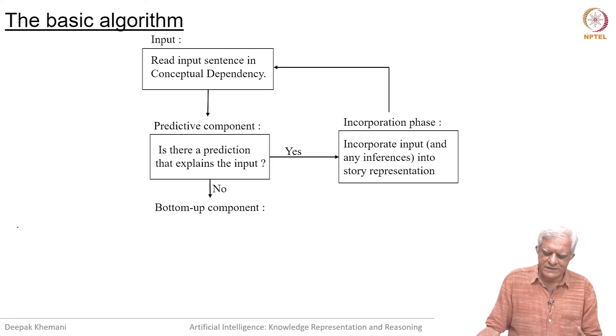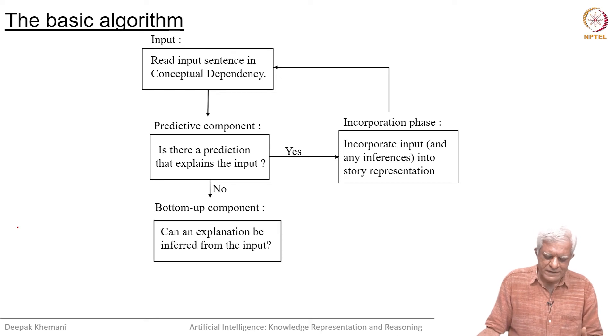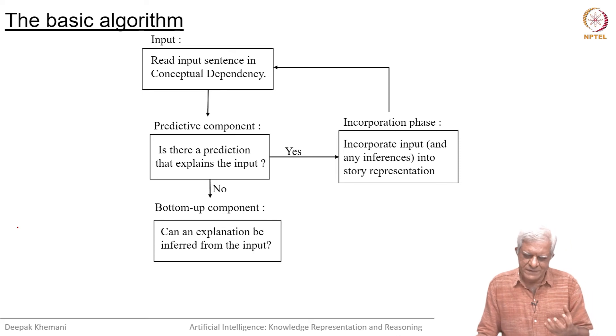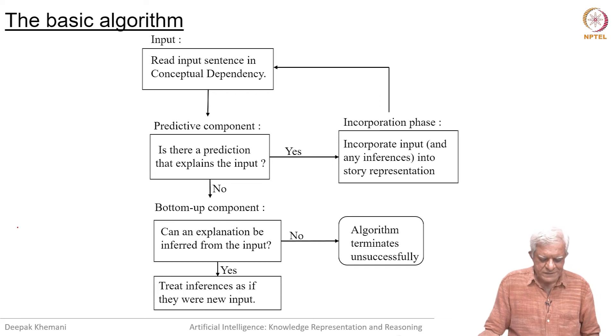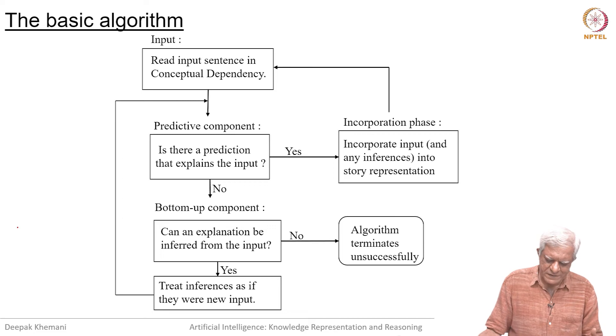If the prediction does not match the input, then you go into the bottom up phase. Can an explanation be inferred from the input? Can whatever we are saying be explained by some rule? If no, then you cannot do anything further. But if yes, then treat the inference as if it was the new input and we will see examples of this.